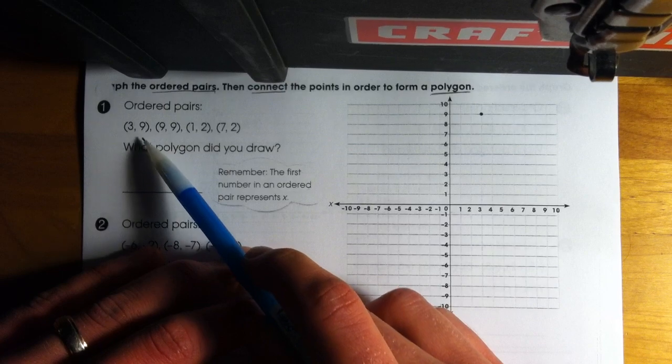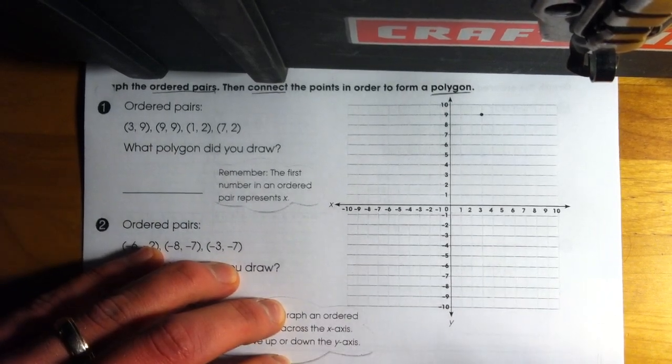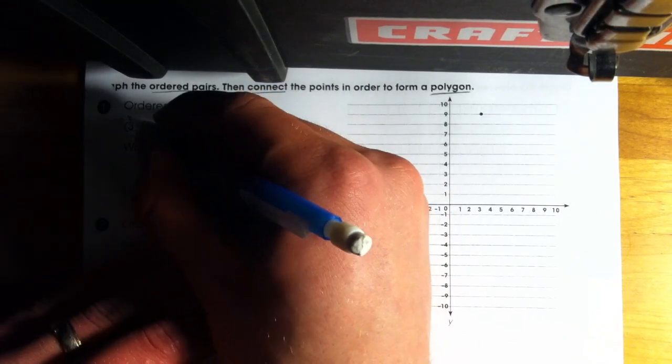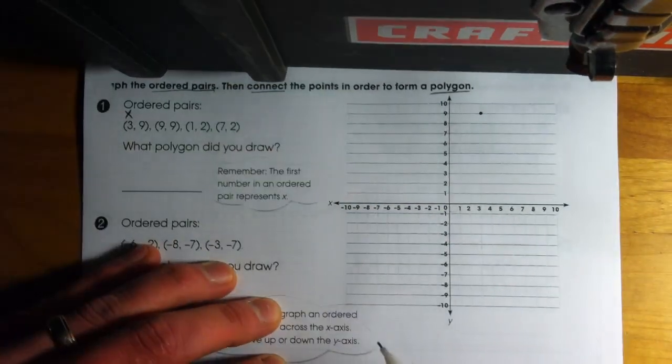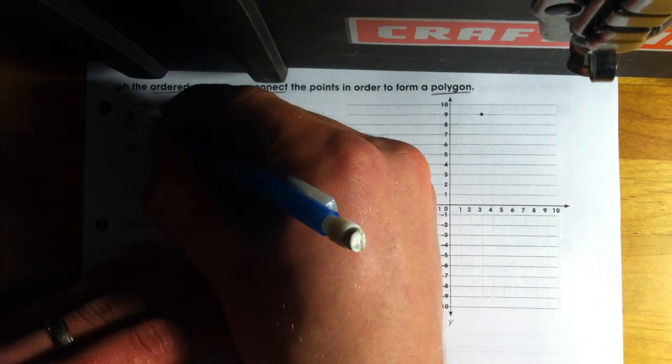So my first one is 3, 9. I've got to identify what's my x-coordinate? What's my y-coordinate? I recognize that my x-coordinate is the first one, which gives me a 3. If I look at my 9, that represents my y-coordinate.